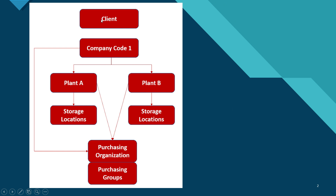To take an example, a client can be the Tata Group. A company code can be Tata Motors, which can have multiple plants — for example, plant A in one location and plant B in another location. Each plant can have several storage locations, and each plant also has a purchasing organization and purchasing group who are a set of buyers.